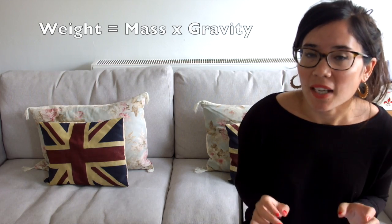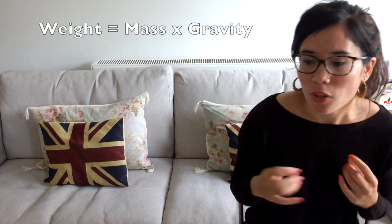On Earth, the gravitational field strength is around 10 newtons per kilogram — use the number 10 because that's the easiest way of looking at it. You can calculate your weight if you know your mass, because the way you convert between weight and mass is: weight equals mass times gravity. So if you know your mass in kilograms and you know that gravity is 10, you just multiply those two numbers together to get your weight in newtons.